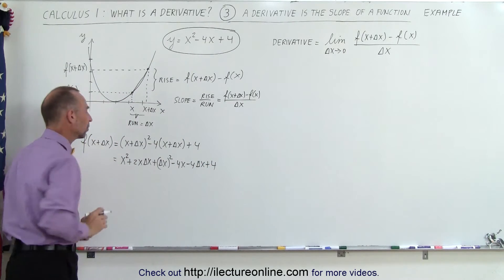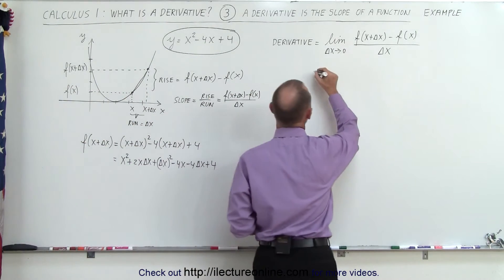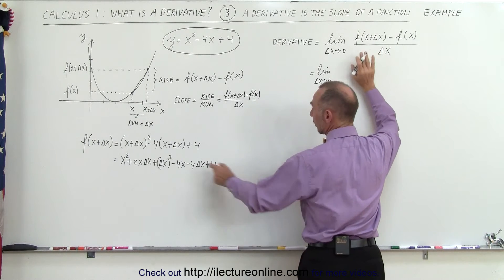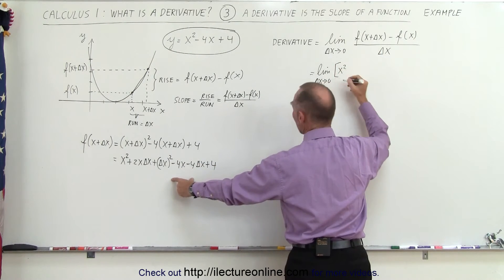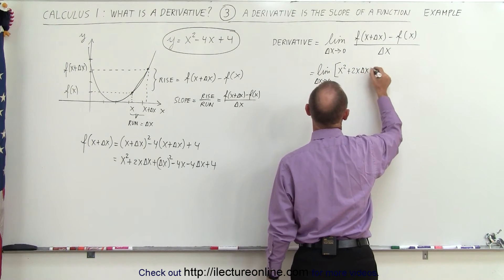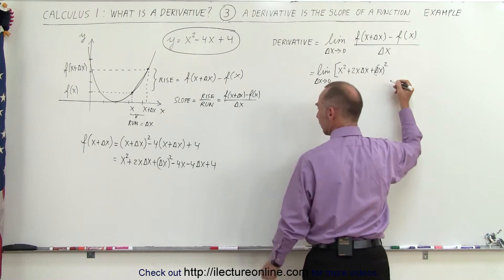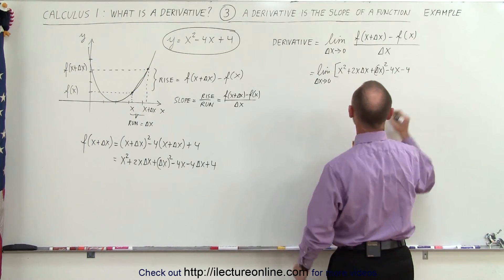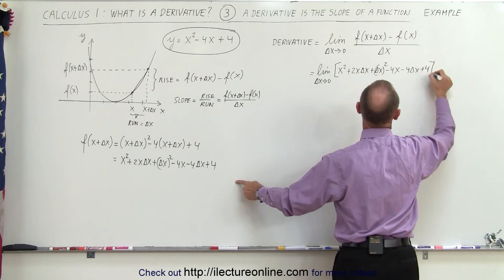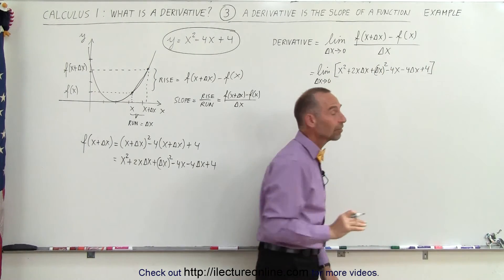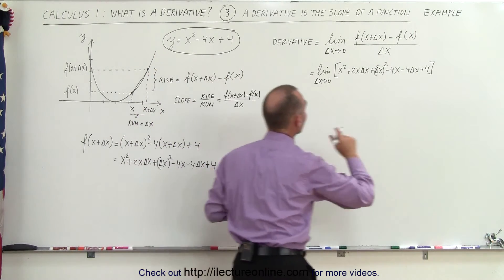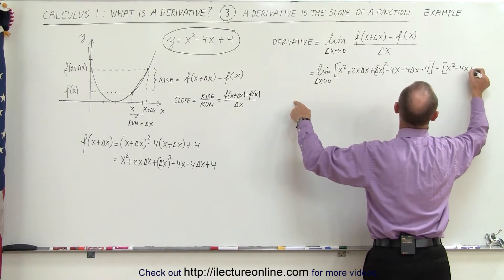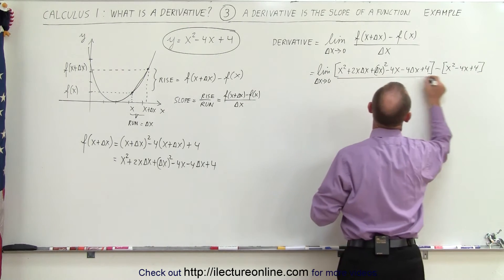So now let's write out the full limit expression. This is equal to the limit as delta x goes to zero of f of x plus delta x — which is x squared plus 2x delta x plus delta x squared minus 4x minus 4 delta x plus 4 — minus the function evaluated at x, which is x squared minus 4x plus 4, all divided by delta x.